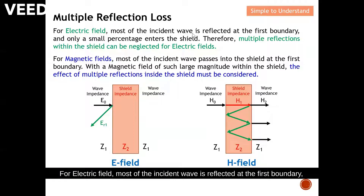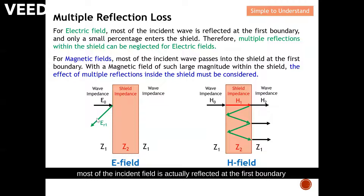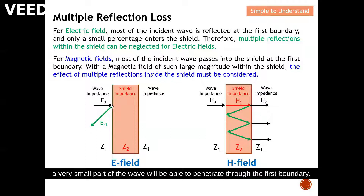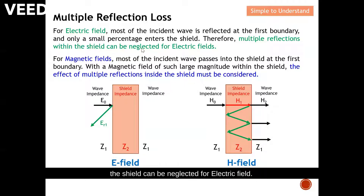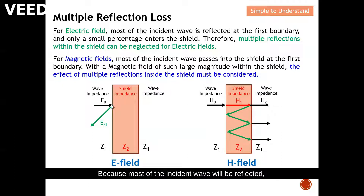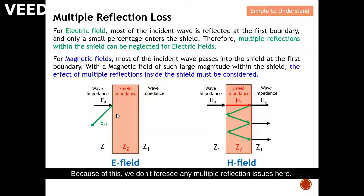For an electric field, most of the incident wave is reflected at the first boundary. As shown in the diagram, at the first boundary most of the incident field is reflected, and only a very small percentage enters the shield. This means very little of the wave penetrates through the first boundary. Therefore, for an electric field, multiple reflection within the shield can be neglected — you do not need to consider it.